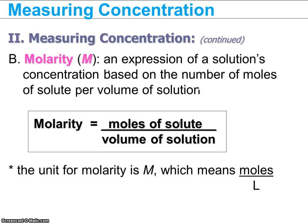A more usable form of concentration measurement, which we'll be using in the next few units, is molarity. Molarity is abbreviated as a capital M, which stands for moles per liter. So if you were to look at a solution labeled 8.5 M, you would say that is 8.5 molar — meaning 8.5 moles of solute per liter of solution. Molarity is calculated by taking the moles of solute divided by the total volume of solution in liters.